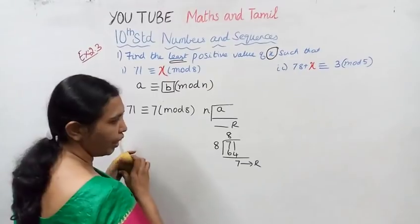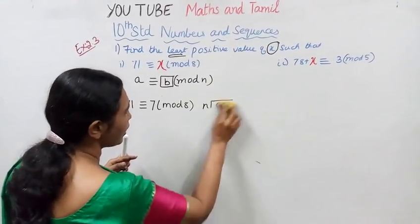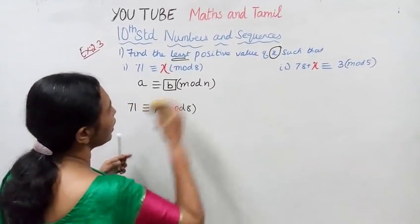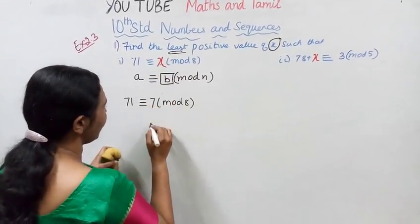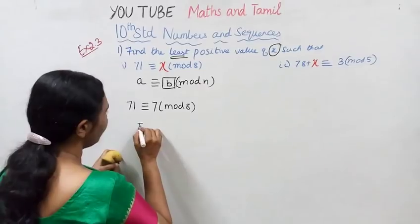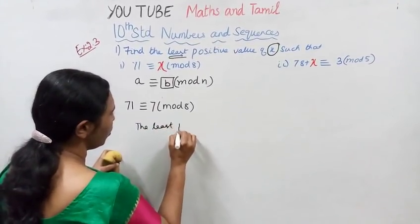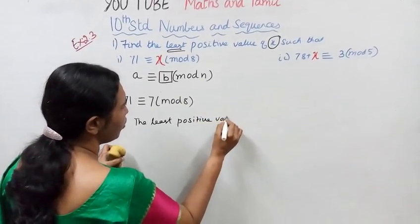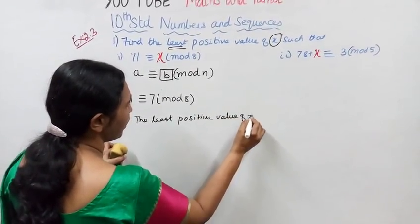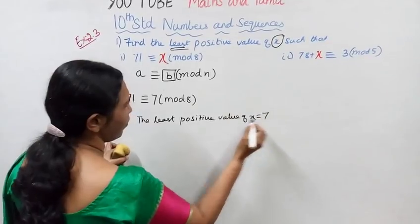This is the least positive value of x equal to 7, the least positive value of x equal to 7.